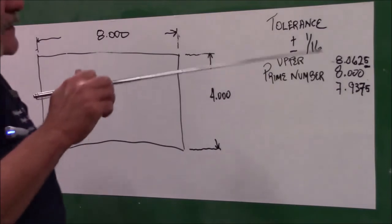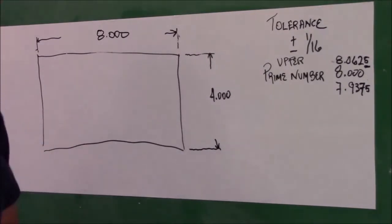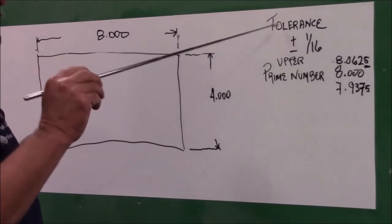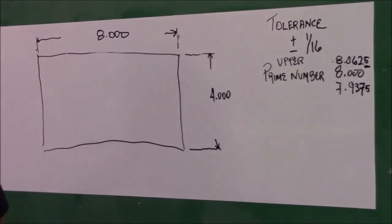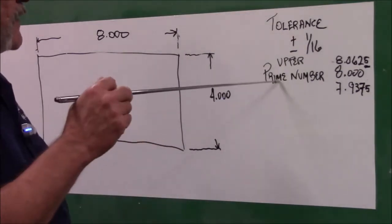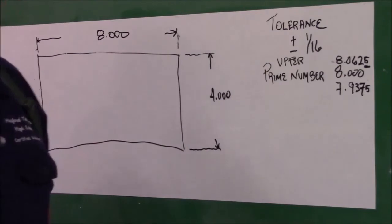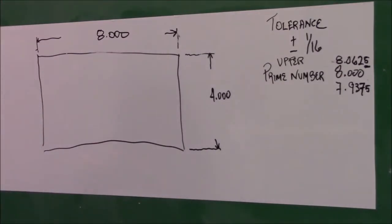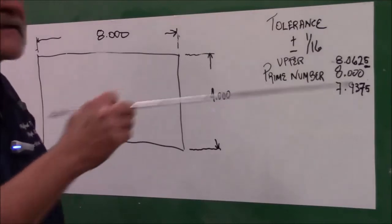The second one is what we are going to talk about is called the bilateral tolerance. Bilateral tolerance on here is one-sixteenth of an inch. The one-sixteenth of an inch, you can tell it is bilateral because you can see a plus or a minus in the tolerance block. What we have is what we call a prime number. The prime number is what you are actually trying to get to and to stay for your tolerance in the project.